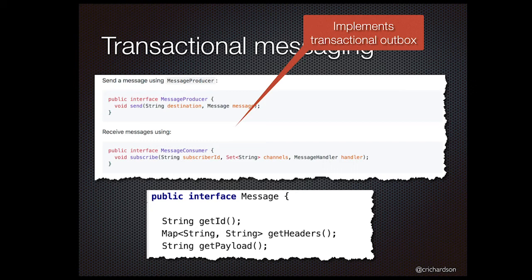An Eventuate message has three attributes: the first is a unique ID; the second are headers, which is a collection of name-value pairs; and the third is the payload, which is typically JSON.